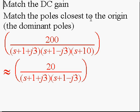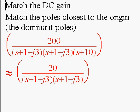The rule of thumb for second order systems is identical to the rule of thumb for first order systems. When you want to come up with a first or second order approximation, match the DC gain and match the pole closest to the origin. If it's a single real pole, you have a first order system. If it's a complex pole, you have a second order system.